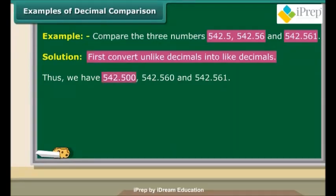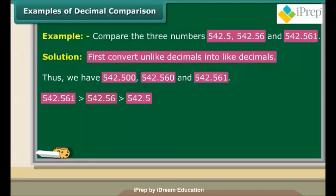Convert all unlike decimals into like decimals by adding zeros at the end. The numbers now will be 542.500, 542.560, and 542.561. Now concentrate on the decimal part alone. The first number represents 500 thousandths, the second number represents 560 thousandths, and the third number represents 561 thousandths. So 542.561 is greater than 542.56, which is greater than 542.5.